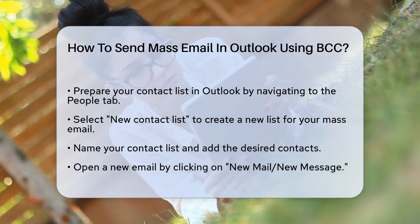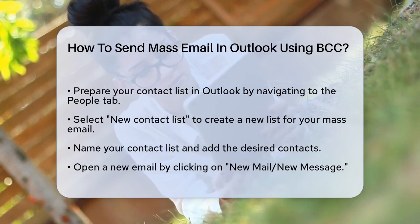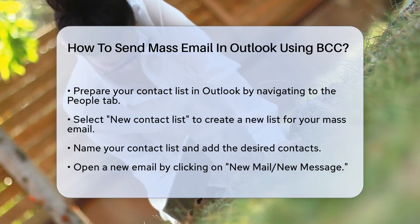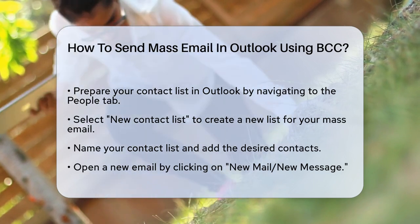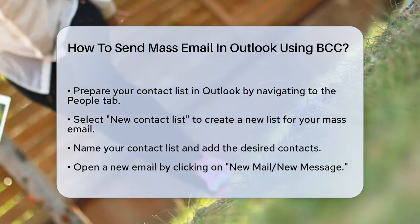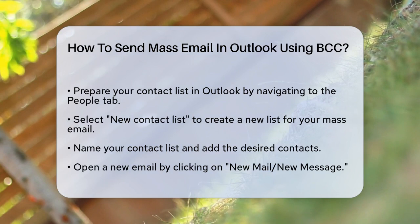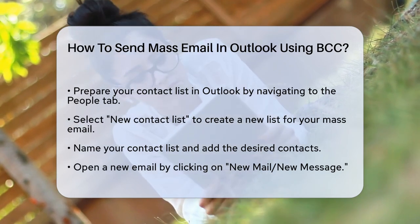First, you need to prepare your contact list. In Outlook, navigate to the People tab and select New Contact List. This will open a new window where you can name your list and add the contacts you want to include in your mass email.